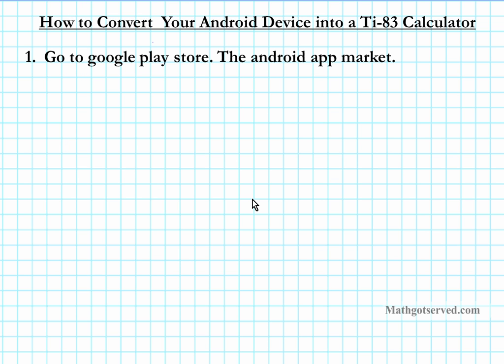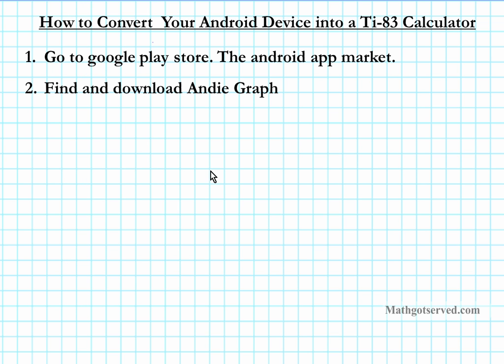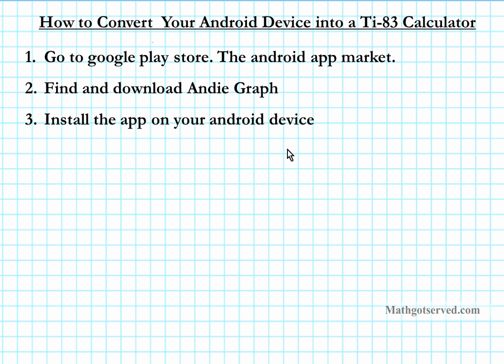So how do we do this? First, you are going to go to the Google Play Store, which is the app market for Android, and you are going to look for a program called Andygraph. You search for it in the search menu, type in Andygraph, and then install the app on your device.